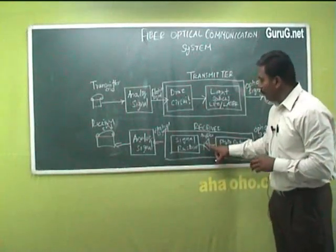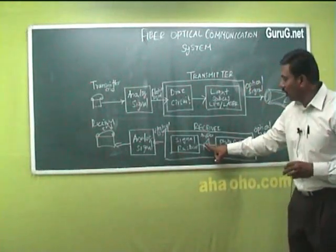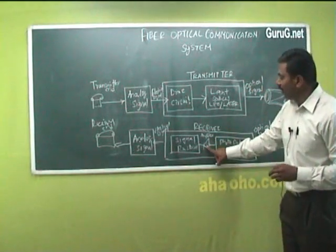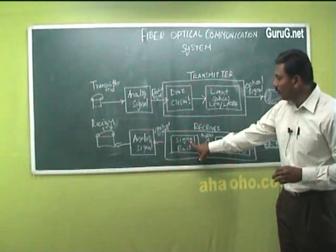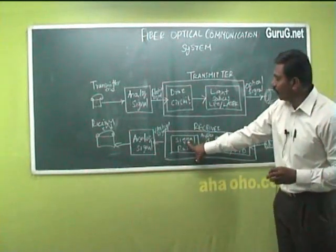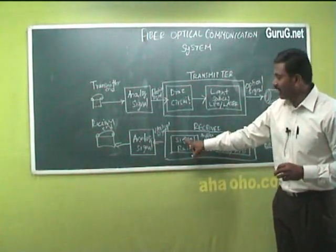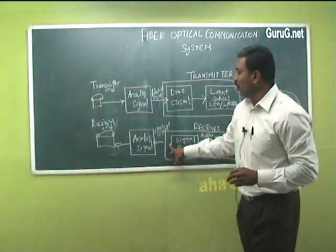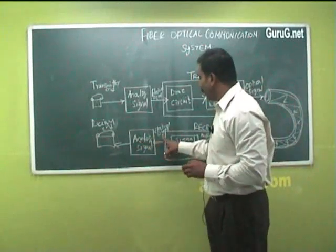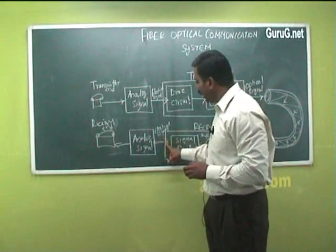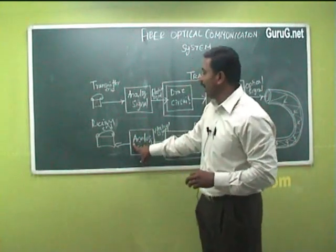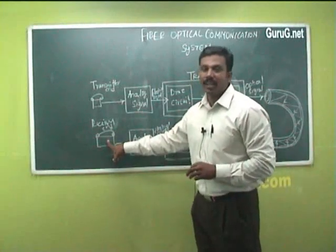Since the electrical signals detected by the photodetector may be weak, they need to be amplified using an amplifier in the receiver. These amplified signals are then passed to the signal restorer, where they are converted back into digital electrical signals, and the electrical pulses are then driven to analog signals. The electrical signals are again converted into analog signals, and the same signals can be heard at the receiver end.